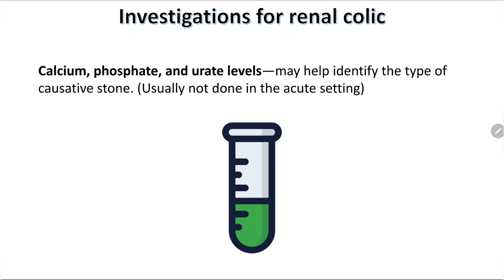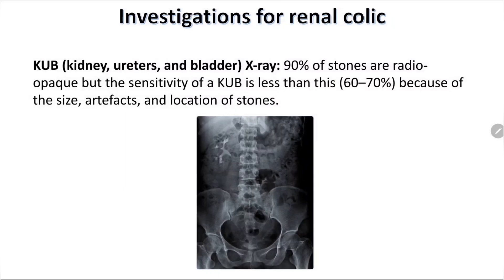Other investigations like calcium, phosphate, and uric acid levels should not be sent in the acute setting, as these identify the type of stone but are not helpful acutely. KUB x-ray — although 90% of stones are radio-opaque, the sensitivity of KUB decreases to 60% because of stone size, artifact, and location, so it is also not very helpful.